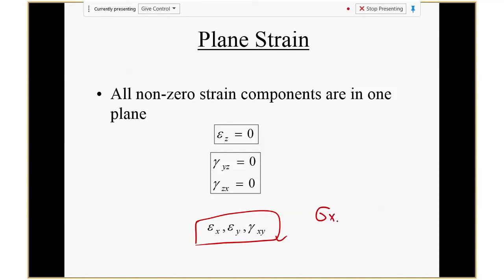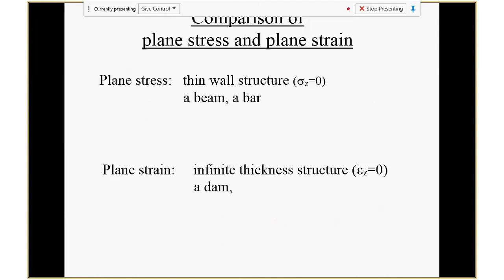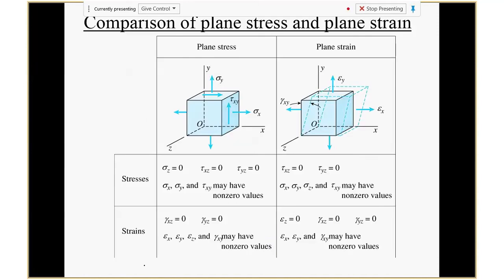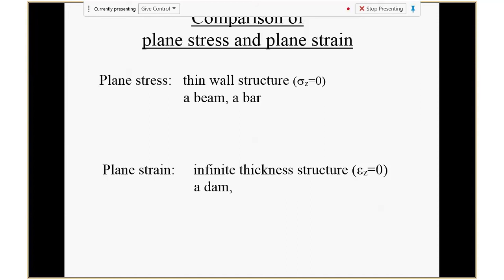If you look at plane strain compared to plane stress — plane stress has σx, σy, τxy (three stress components), while plane strain has εx, εy, γxy (three strain components). They're very parallel. Now the question is: what if you rotate the axis? When you rotate to an arbitrary direction, you get different strain components. So we'll look at how strain transforms — similarly, you'll have a Mohr's circle for strain.